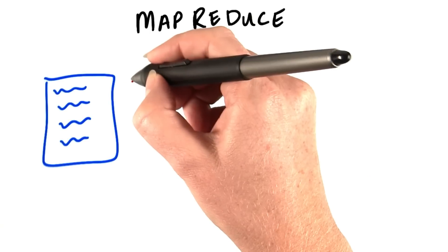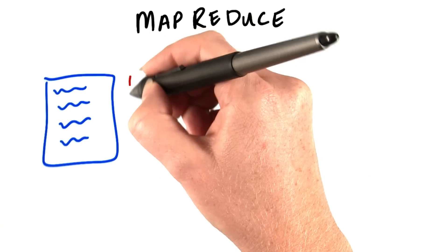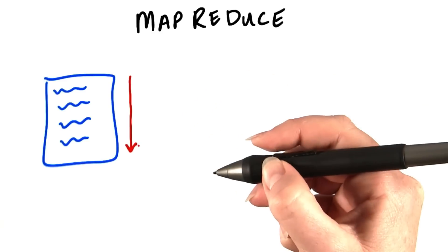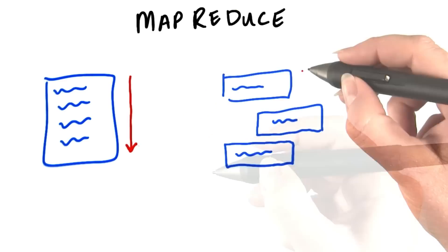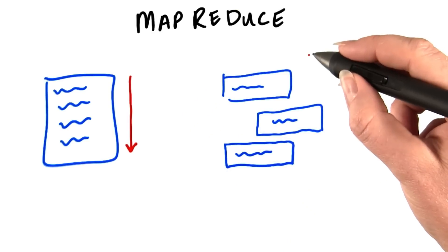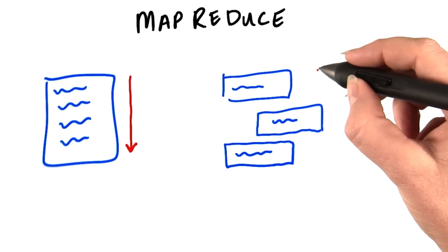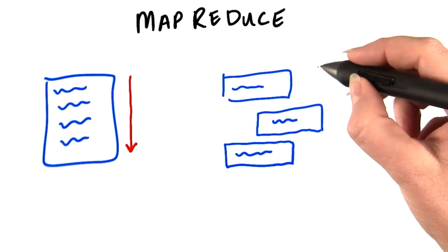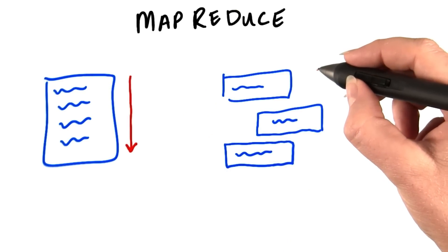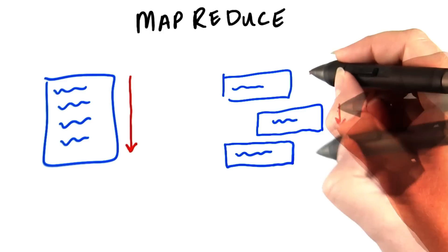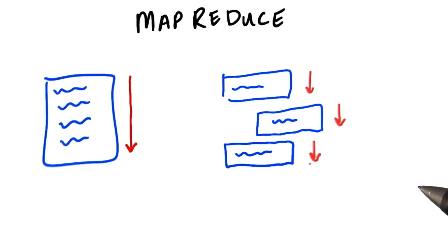Say I had a large file. Processing that serially from the top to the bottom could take a long time. Instead, MapReduce is designed to process data in parallel, so your file is broken into chunks and then processed in parallel. To explain, let's look at a real world scenario.